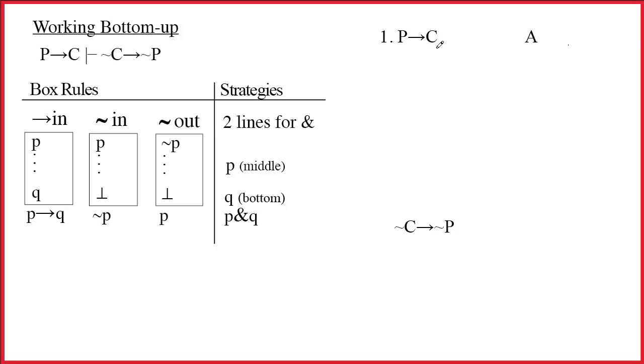This actually makes most sense if you think about P arrow C as a necessary condition statement. Necessary conditions are read backwards, so this says C is necessary for P. Well if it's true that C is necessary for P, then it's also true that if you don't have C then you don't have P.